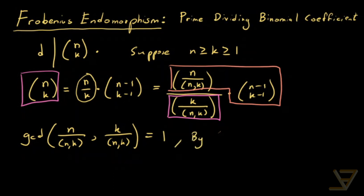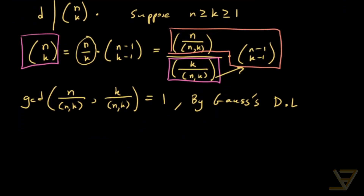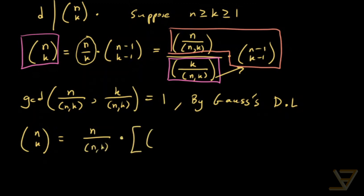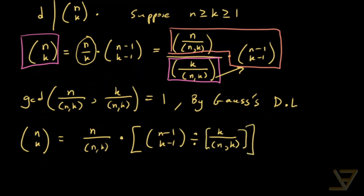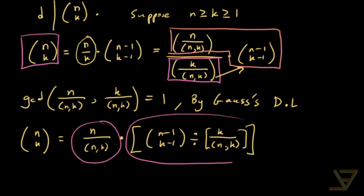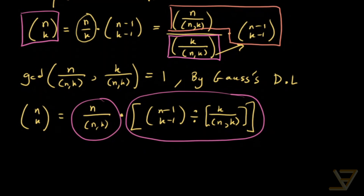So by Gauss's divisibility lemma, we find that (k over GCD(n,k)) divides n minus 1 choose k minus 1. So we can write that n choose k equals (n over GCD(n,k)) times (n minus 1 choose k minus 1) divided by (k over GCD(n,k)). Both of these factors are integers, which means by definition n over GCD(n,k) divides n choose k.